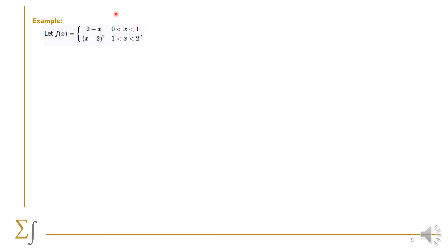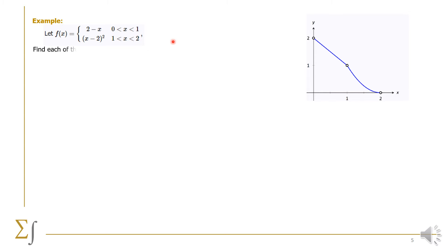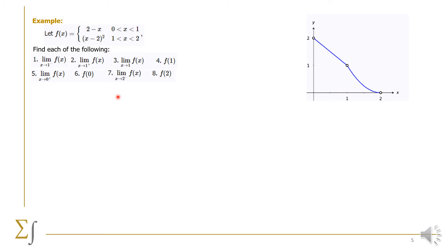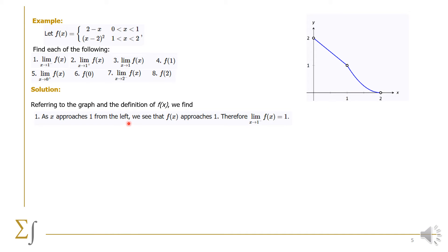Let's take an example. We are given f(x) equals 2 minus x when x is in the open interval 0 to 1, and equals (x minus 2) squared when x is in the open interval 1 to 2. The graph shows a straight line and a part of a parabola shifted two units to the right, with open circles for the open intervals. As x approaches 1 from the left, we see that f(x) also approaches 1. So the limit of f(x) as x goes to 1 from the left is equal to 1.